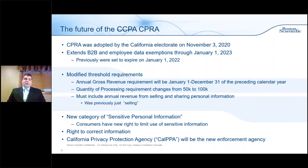The CPRA extends B2B and employee data exemptions through January 1st, 2023 — previously set to expire January 1st, 2022. This provides another year before these two data categories come in scope, which is a benefit from a corporate perspective. However, the other side of the argument is that it creates significantly more obligations on the organization, so while there is this benefit, the overall work effort increases substantially as a result of the new ballot measure.